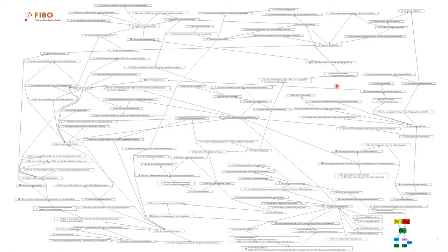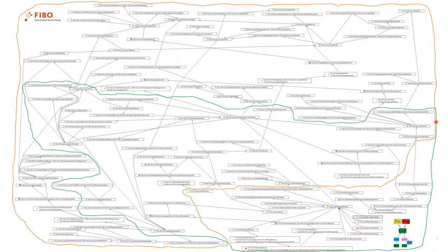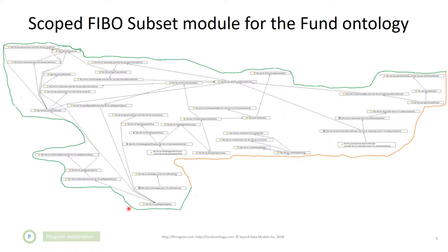Here is a diagram of the core FIBO and fund ontology classes. The orange line represents the scope — these are all the FIBO classes. The green line represents our fund and hedge fund ontology. We can see classes like the investment advisor, which is a subclass of the FIBO financial services providers. That gives us the intersection — all the FIBO core classes we need for the fund ontology. The scoped model we want to extract from FIBO is basically that intersection of FIBO and the full fund ontology.